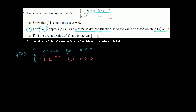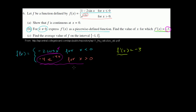If this weren't piecewise defined, you'd simply set f prime of x equal to negative 3 and solve. But here you have to decide which case to use — you don't know yet if x will be less than or greater than 0. The key insight is that cosine of x is a bounded function: it can only go between positive 1 and negative 1. So negative 2 cosine of x can only go between positive 2 and negative 2 — it can never reach negative 3. So if any value reaches negative 3, it must come from the x greater than 0 piece.